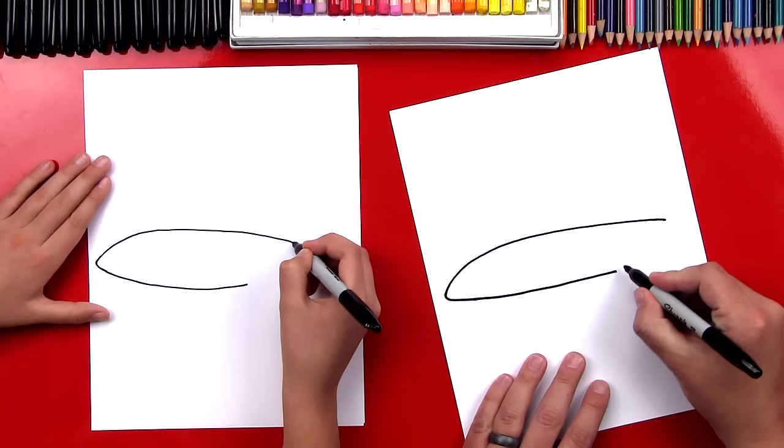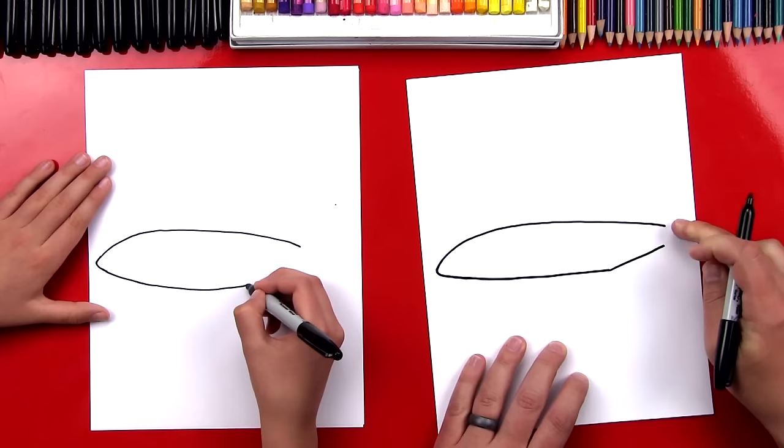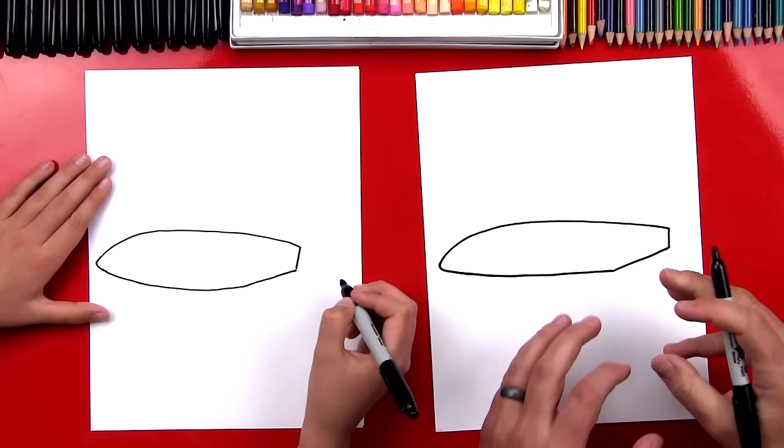All right, cool. Now right here we're gonna draw a diagonal line that comes up and it's closed so it's tapering back to the top line. And then we're gonna draw a straight line down. There's the body of our plane. Yeah, pretty simple.